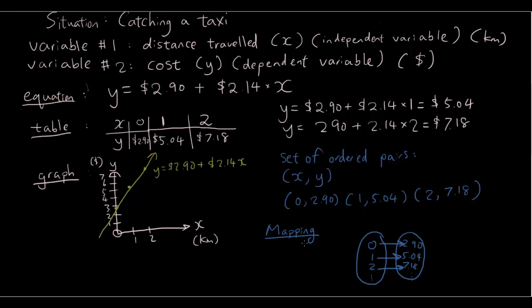So, all of these, these five methods. So, we have equation, table, graph, ordered pairs and mapping. These are five ways of representing a relation.